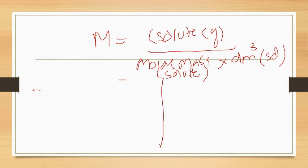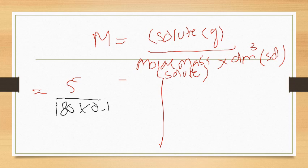For glucose: the given amount of solute was 5 grams, the molar mass of glucose was 180 grams per mole, and the volume was 0.1 decimeter cubes.